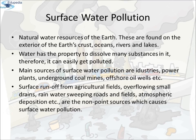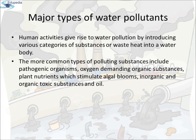Water has the property to dissolve many substances in it; therefore it can easily get polluted. Main sources of surface water pollution are industries, power plants, underground coal mines, offshore oil wells, etc. Surface runoff from agriculture fields, overflowing small drains, rainwater sweeping roads and fields, and atmospheric deposition are the non-point sources which cause surface water pollution.